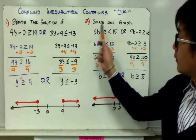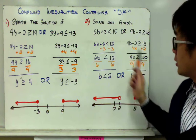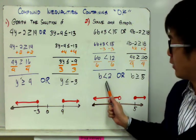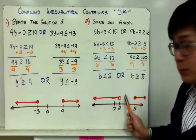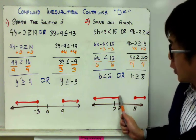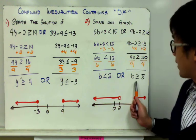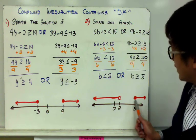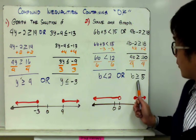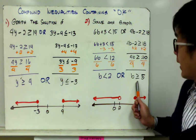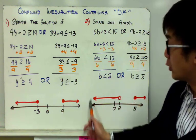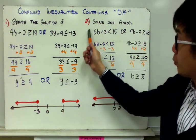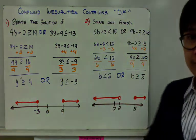To graph example 2: the first set is a less than inequality, so I use an open circle going towards the left. For the second inequality, I use a shaded circle because I have the greater than or equal to symbol. This is how you represent the compound OR inequality in a graph.